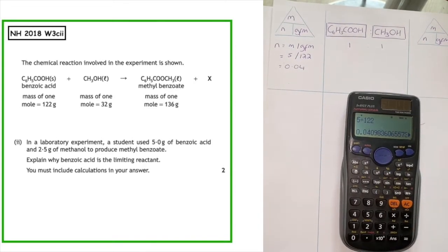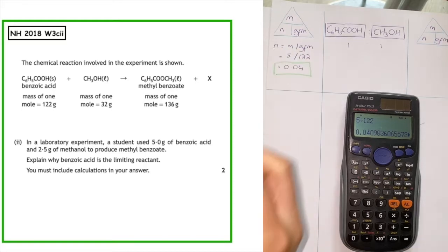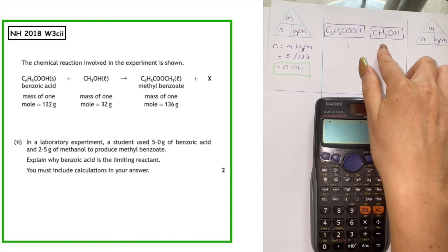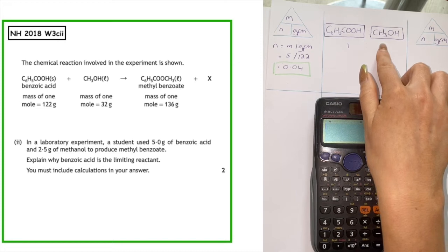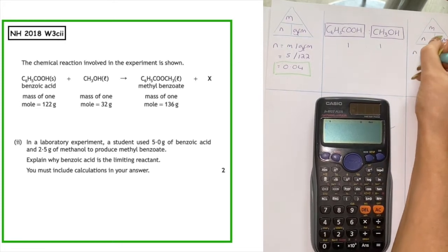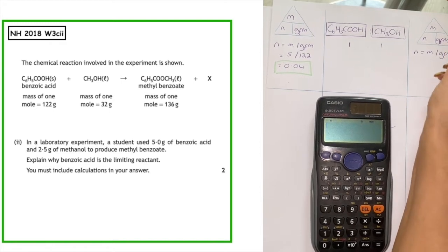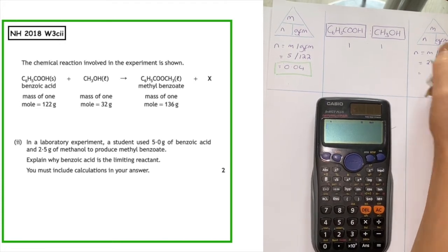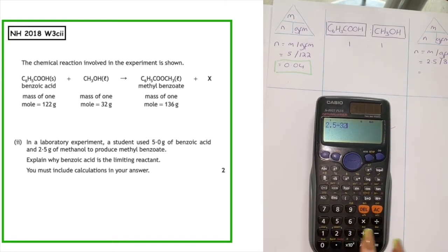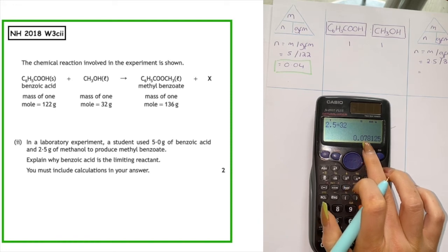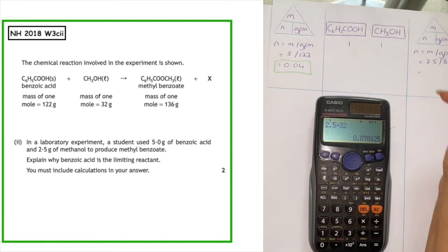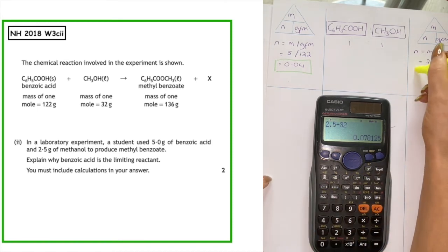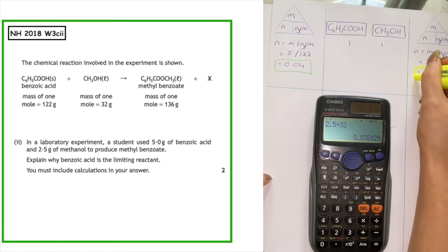We put a highlighted box around 0.04 because that is what we actually have. On the other side, we calculate the number of moles of methanol. The information given is 2.5 grams, so again we use the mass triangle: N equals M over GFM. The mass is 2.5 and we divide by the GFM of 32 grams. 2.5 divided by 32 gives the number of moles as 0.078, which we round up to 0.08. We put a highlighted box around that to remind us that is the actual number of moles from the question.